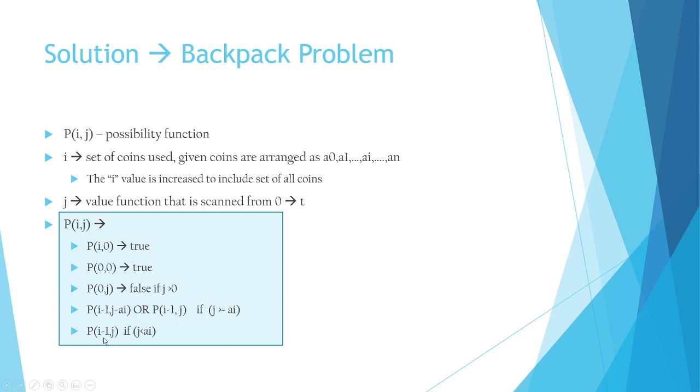Then you look at the case where ai is large and it doesn't fit. That means you cannot take it, and if you don't take it, then P(i-1,j), just like the previous one, i minus one j is the other possibility. These are the equations that will define every square that you'll try to fill.